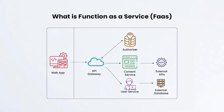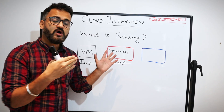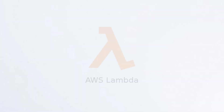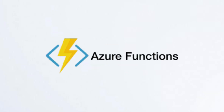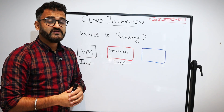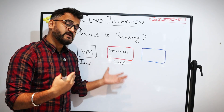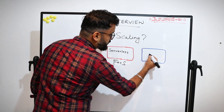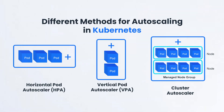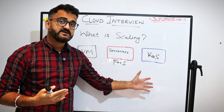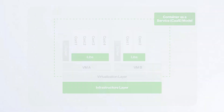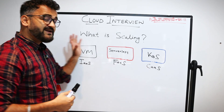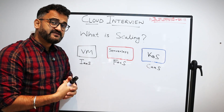But that is where the interviewer is expecting a layered answer — not specifically about a virtual machine, but about different cloud stacks. One is VM, which we all know. The second is serverless, which comes under function as a service — AWS Lambda, Azure Functions, Google Cloud Functions. The third facet revolves around Kubernetes, deploying microservices under container as a service. We'll break down how to answer this question better.